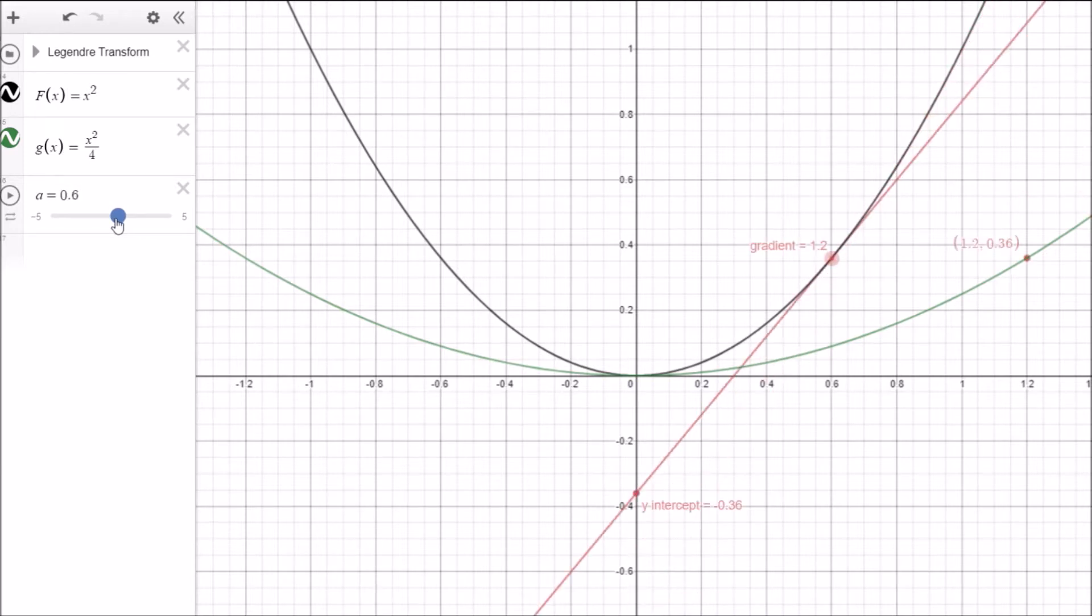Now you can see as well, I've put in an intercept point. So that's the intercept point at the bottom here. So for example, this line here is going to be given by the equation of a straight line, which is y equals mx plus c. So it would just be 1.2x, and the c would be minus 0.36. So the equation of this straight line here is y equals 1.2x minus 0.36.